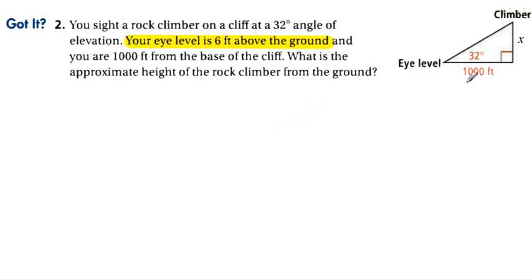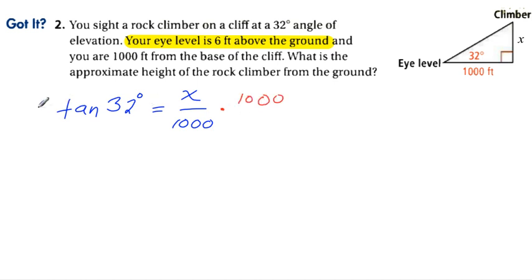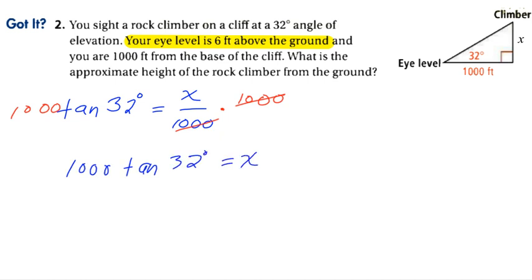With this angle as our reference, x is the opposite side and 1,000 is the adjacent side, so we use the tangent function. Tangent of 32° = x / 1,000. Multiply both sides by 1,000: x = 1,000 × tan(32°). Punching that into the calculator gives approximately 624.9 to the nearest tenth.